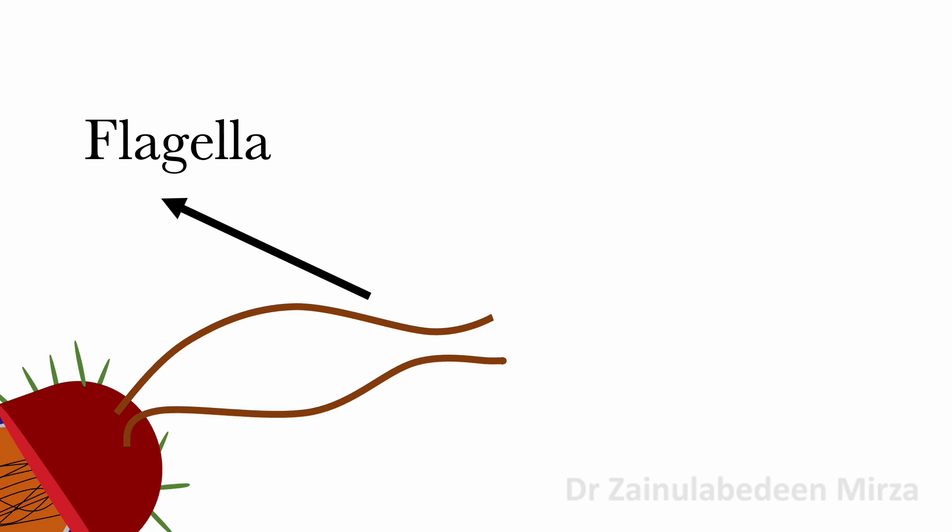The flagella is a specialized structure found on the cell surface of bacteria, and this structure helps bacteria move, stick to the surface, and exchange genetic material with other cells. The flagella is a web-like structure that acts to make bacteria move.